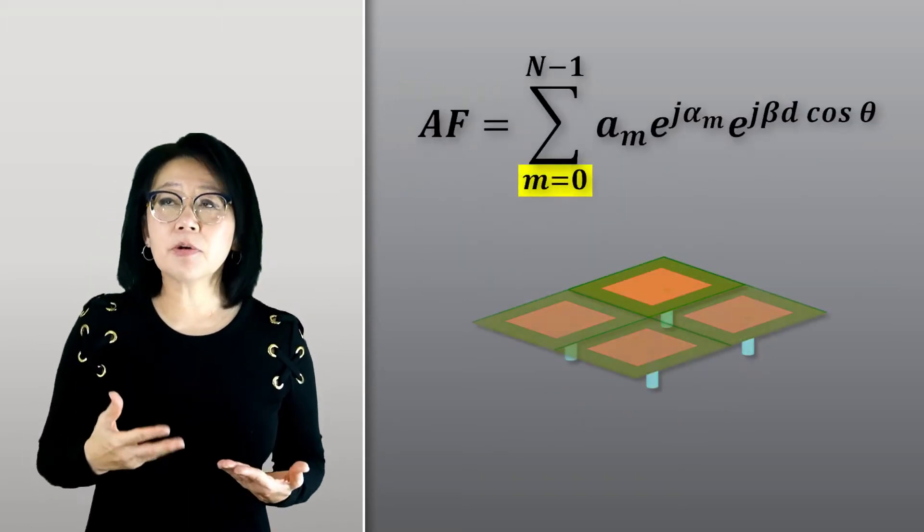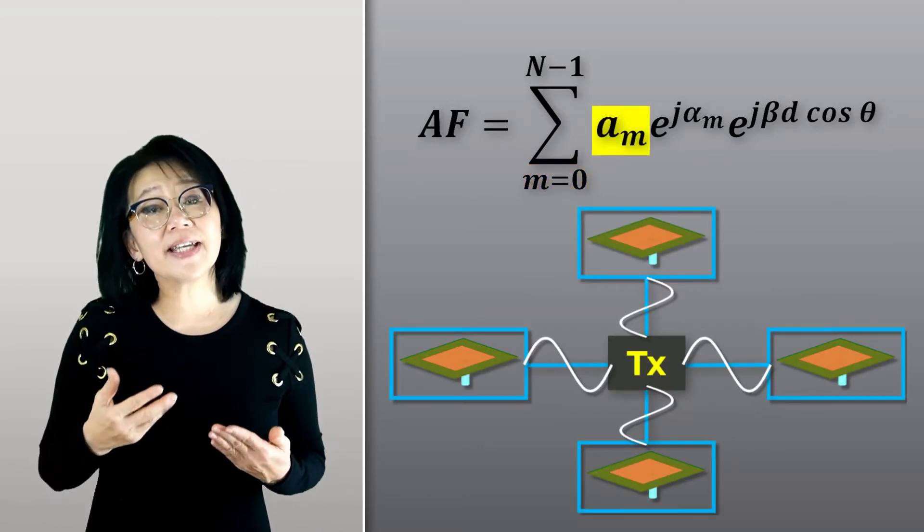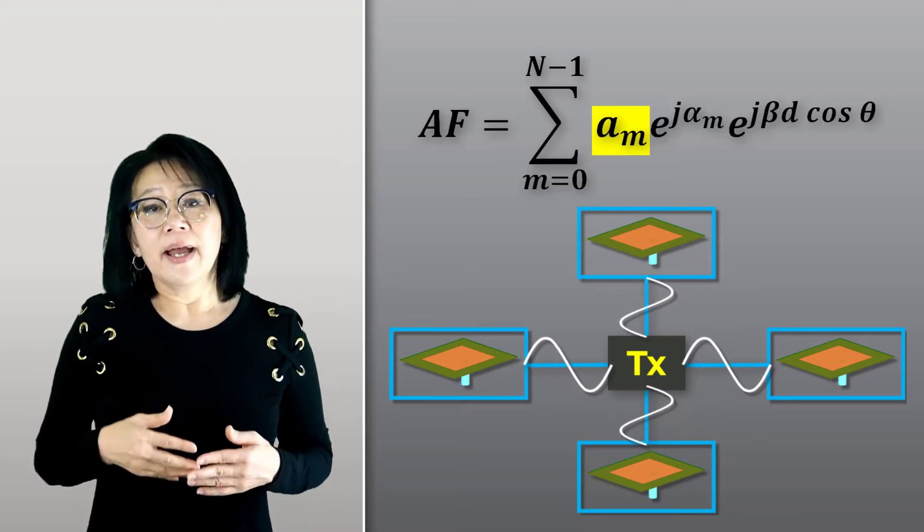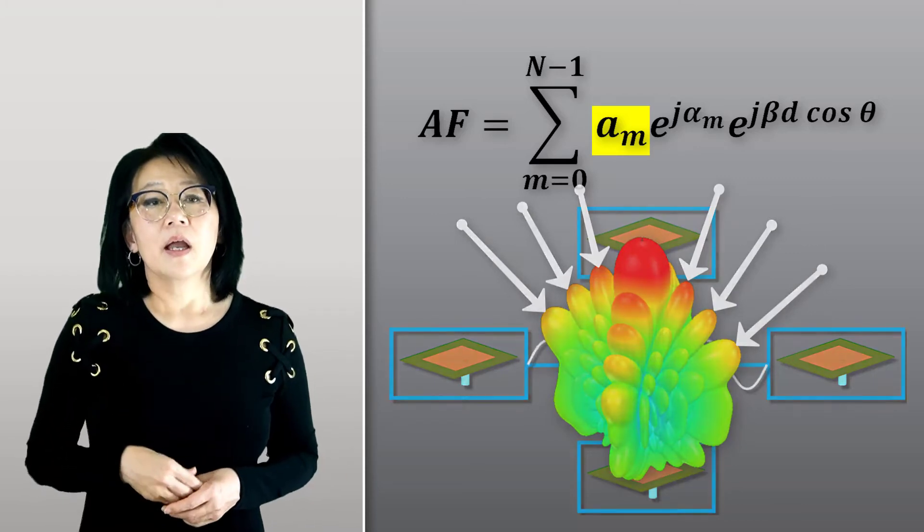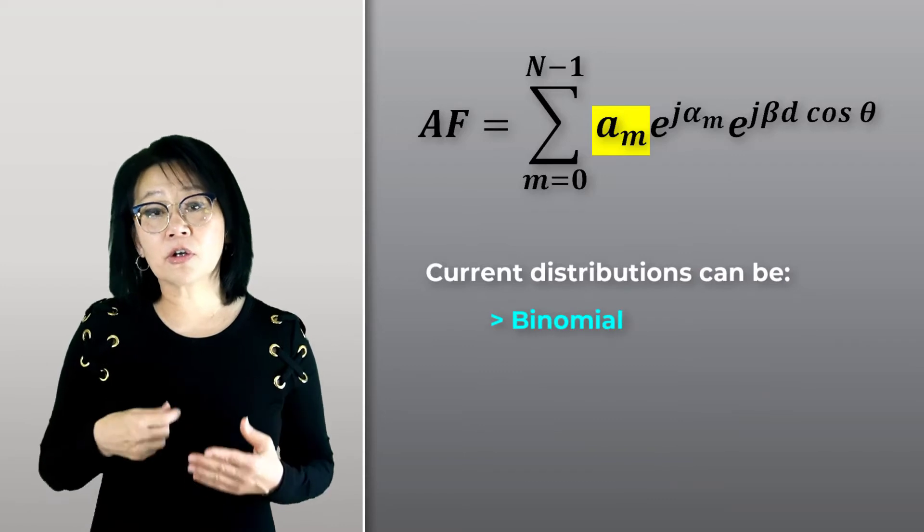m is the number of elements, a_m is the relative amplitude of each element, which controls element amplitude and helps define element half power within the sine lobes. Current amplitude distributions can be binomial, Chebyshev, or some other algorithm.